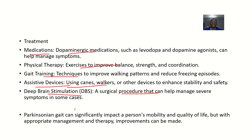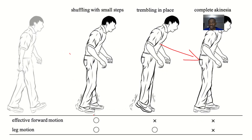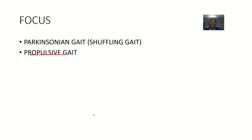Parkinsonian gait greatly affects the person, so if you see somebody with a Parkinsonian gait, help them, and if you're a medical practitioner, do what you can to help their condition. That's it for Parkinsonian gait — also called shuffling gait or propulsive gait — which is seen in Parkinson's disease patients.